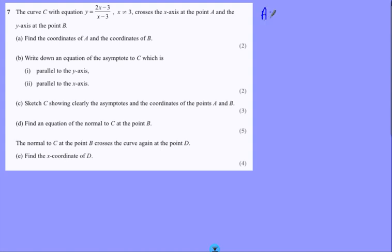So for our first part, point A. Cross the x-axis when y equals 0. And that happens when 2x minus 3 over x minus 3 equals 0. We're interested in when the numerator is 0. The denominator is never going to make this 0. So 2x minus 3 is the thing that needs to be 0. And so x equals 3 over 2.